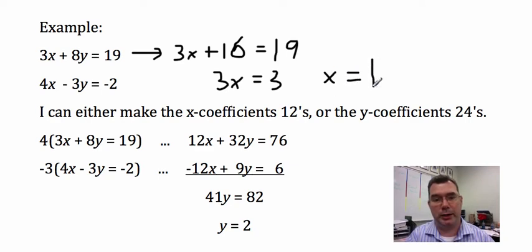I should plug that into the other equation and see if it works. x = 1 and y = 2. If I plug that in, 4 times 1 is 4, and -3 times 2 is -6. So 4 minus 6 gives me -2, which checks out.